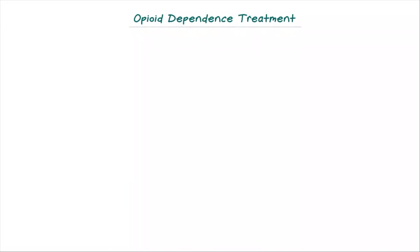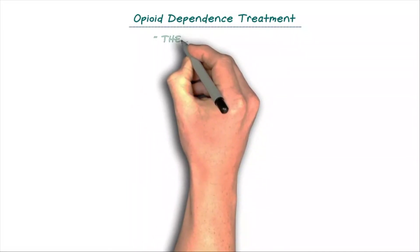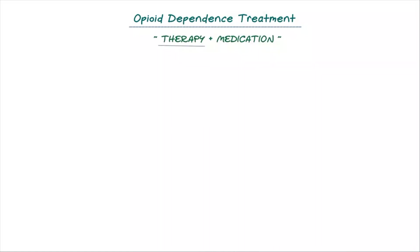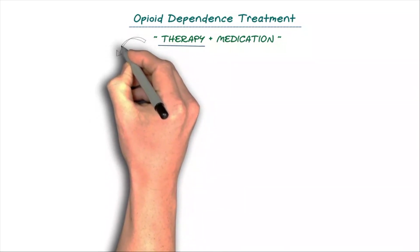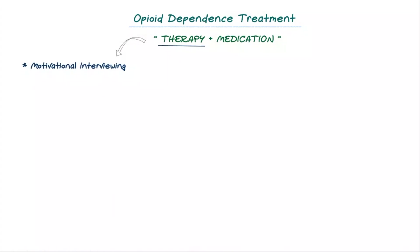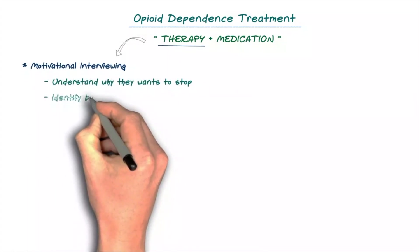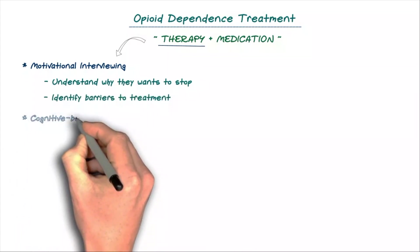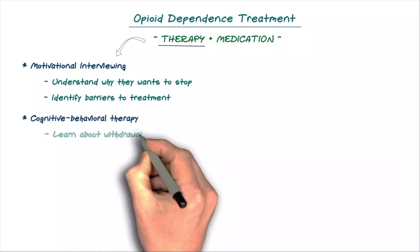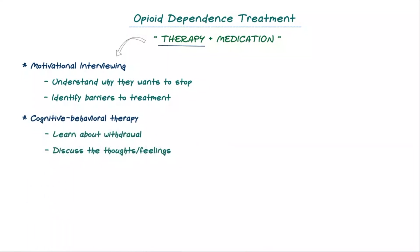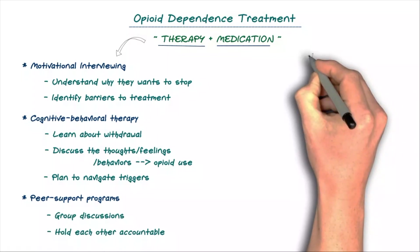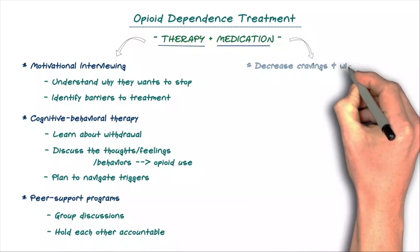For people with opioid dependence, the most effective treatment is a combination of therapy with medications. Specific therapies that work include motivational interviewing, which can be used to understand why an individual wants to stop using opioids and identify specific barriers to treatment. Also, cognitive behavioral therapy can help an individual learn about withdrawal, discuss the thoughts, feelings and behaviors that lead to opioid usage and create a plan to navigate triggers for usage. Another form of therapy are peer support programs which use group discussions to help individuals commit to ending the use of opioids and by holding one another accountable. In addition, the evidence strongly supports the use of medications which reliably decrease cravings and reduce withdrawal symptoms.